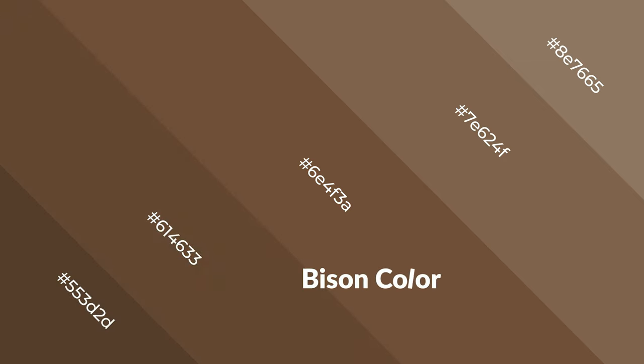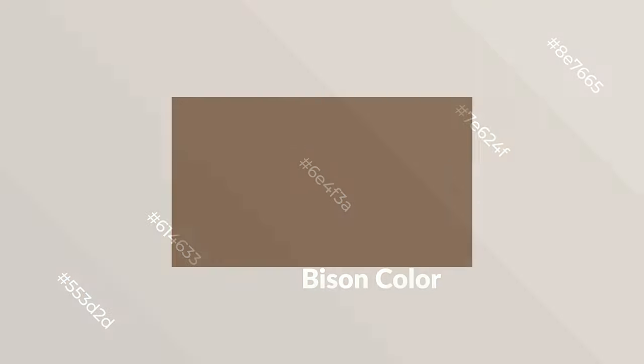Warm colors are symbols of warmth, fire, heat, and sunshine. They also evoke joy, passion, love, and even anger. You can see them used in restaurants and gyms.